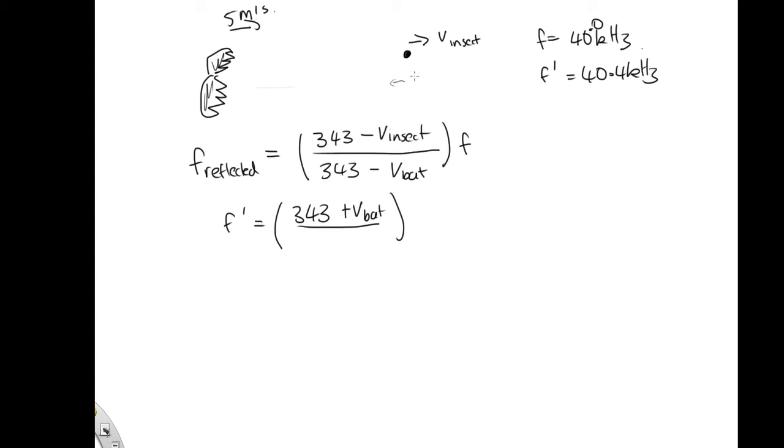And the insect is the source of the reflective wave. So that's 343. Now in this case, the insect, the source of the reflected sound, is moving away from the bat. And so instead of having a negative here, we end up with a positive, so v-insect here.